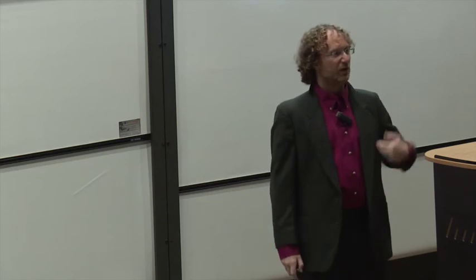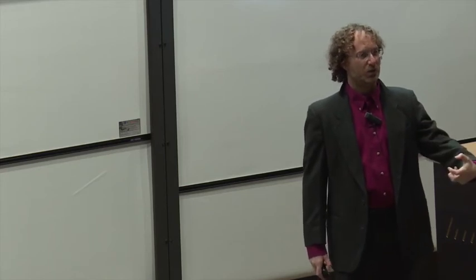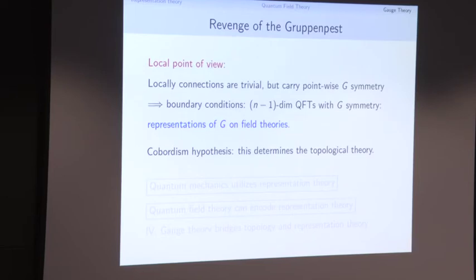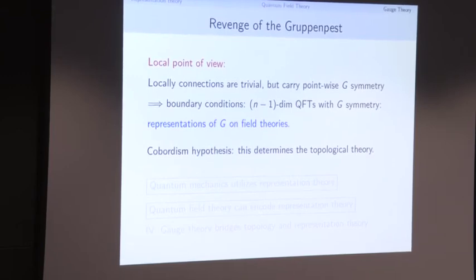I'd like to take a different point of view inspired by the cobordism hypothesis. To understand gauge theory, I want to think about its boundary conditions. Instead of taking a compact n-manifold, I take a little ball. Locally, connections are trivial — but they carry symmetry: a pointwise action of the group G, our gauge symmetry. So when we think of boundary conditions in a gauge theory, they will be quantum field theories in lower dimension which carry an action of G. Boundary conditions in a gauge theory are representations of G on quantum field theories — quantum field theories with G-symmetry.